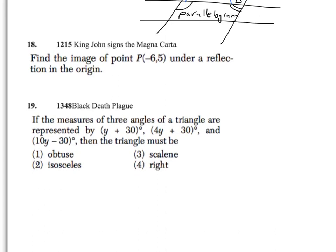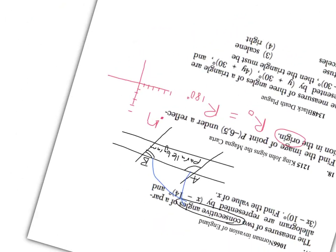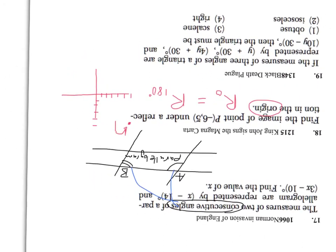For question 18 — reflection through the origin. Remember that a reflection through the origin is identical to a rotation of 180°. Another way to get the question right is to graph it and then turn your paper upside down. For example, (−6, 5) is in quadrant 2. When you reflect it through the origin, it's identical to rotating it 180°, so just name the point that you see there.